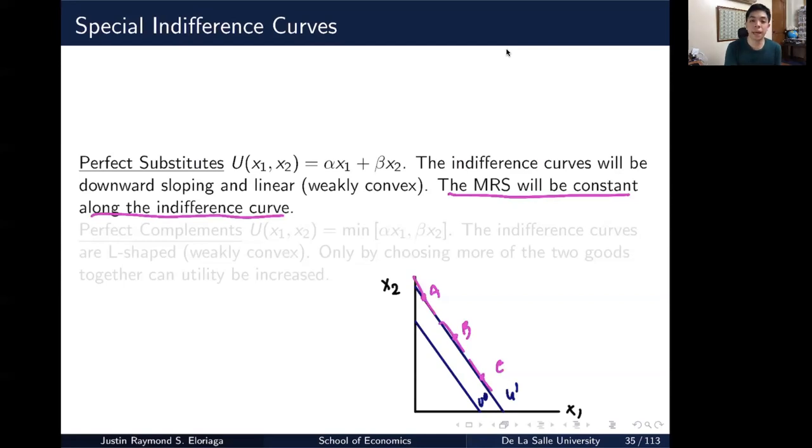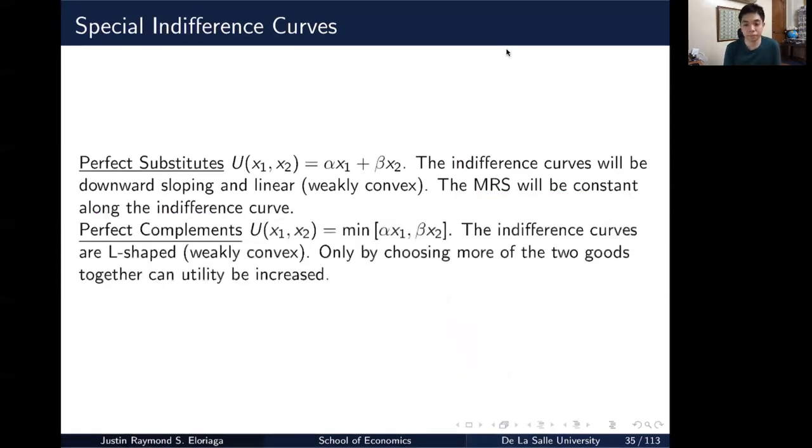So another thing that we have is a perfect complement. The indifference curves for perfect complements are L-shaped. So in order for you to increase consumption in one good, you need to increase also the consumption in another good to attain higher utility level. So it looks something like this. Say I have x2 here and then say I have x1 here.